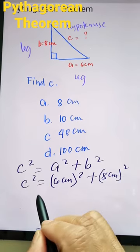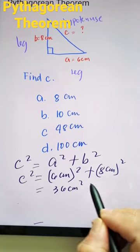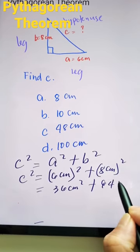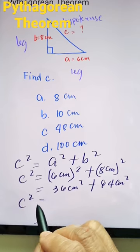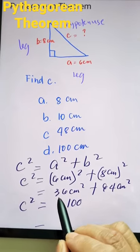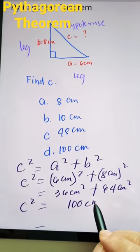So we have now 36 centimeters squared plus 64 centimeters squared. 8 times 8, 6 times 6. So c squared now is equal to 100, 36 plus 64 centimeters squared.